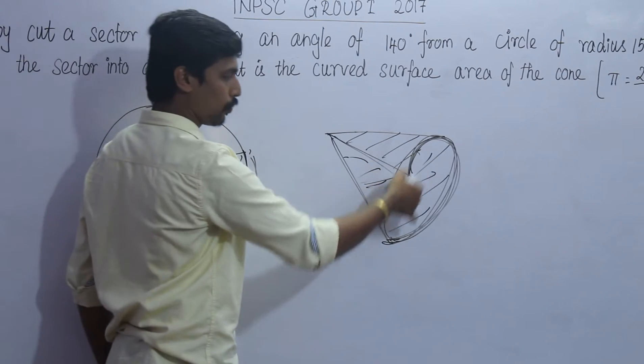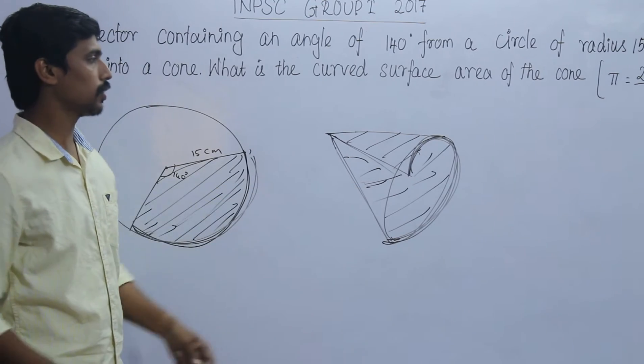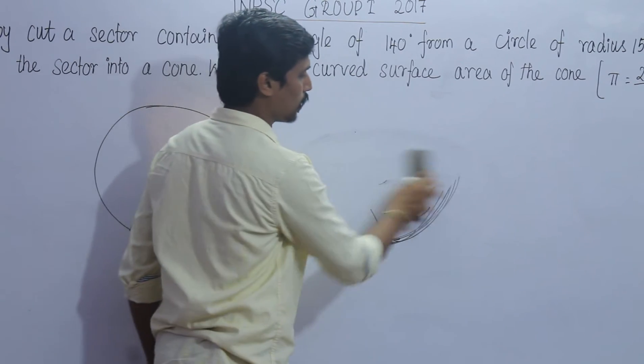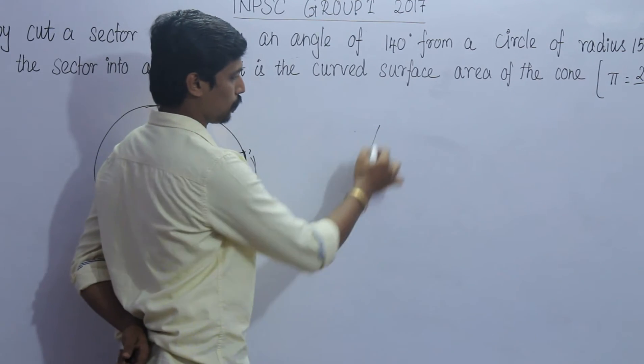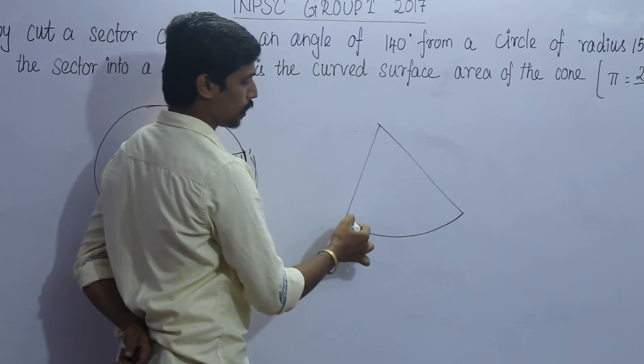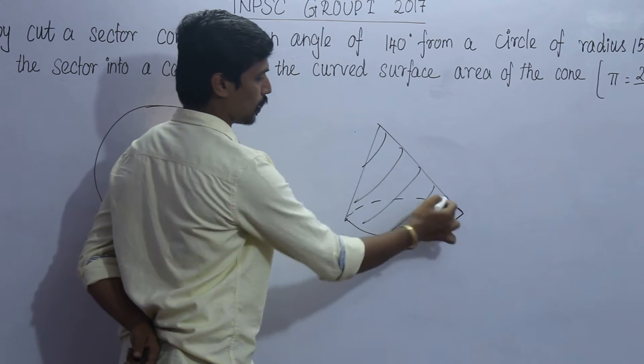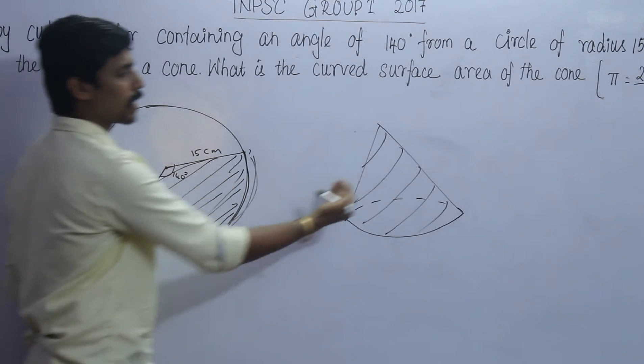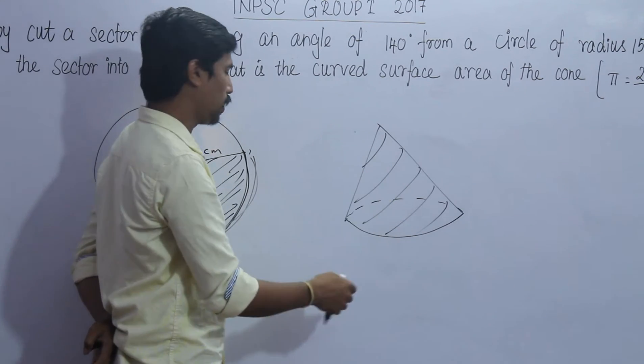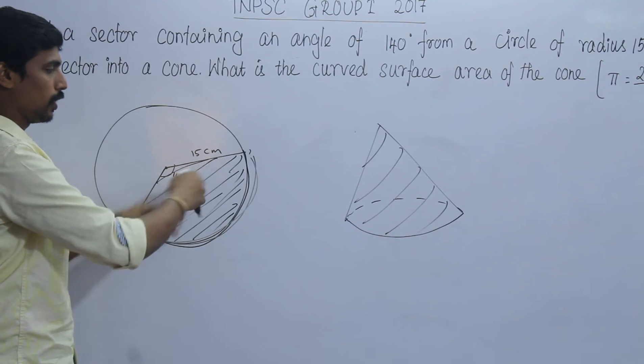If you fold it up, the curved shape will be the cone's curved surface. When you fold this sector, this curved portion becomes the cone's surface. This area is the covered surface area. If we find this area, that will be the curved surface area of the cone.